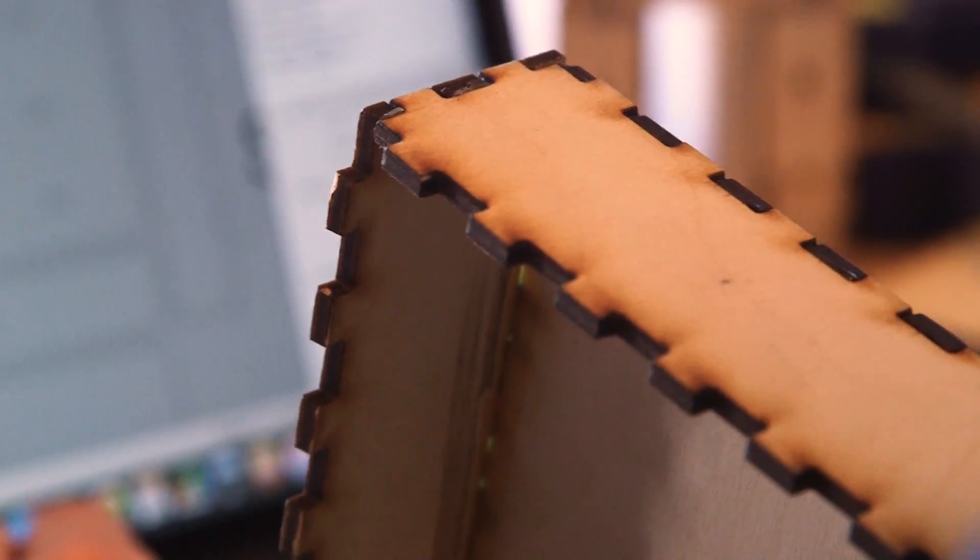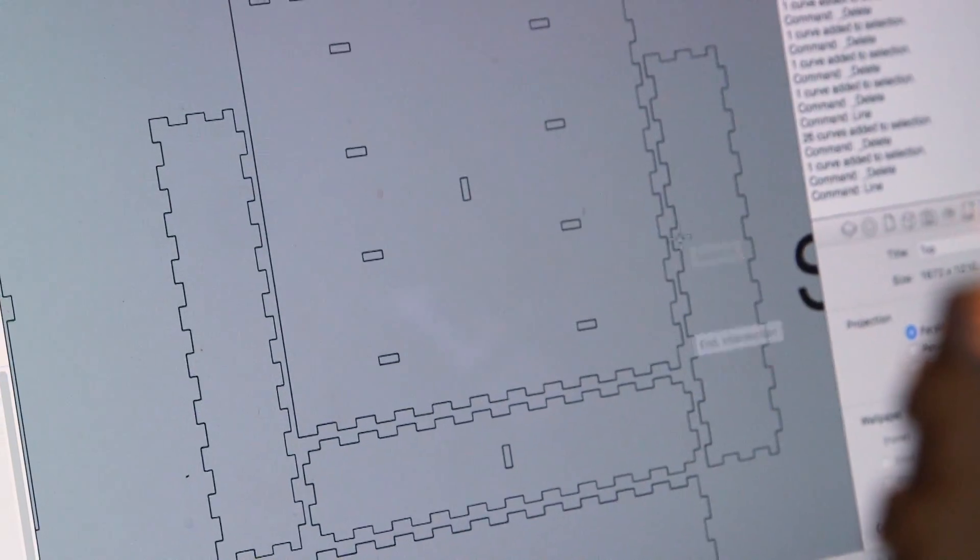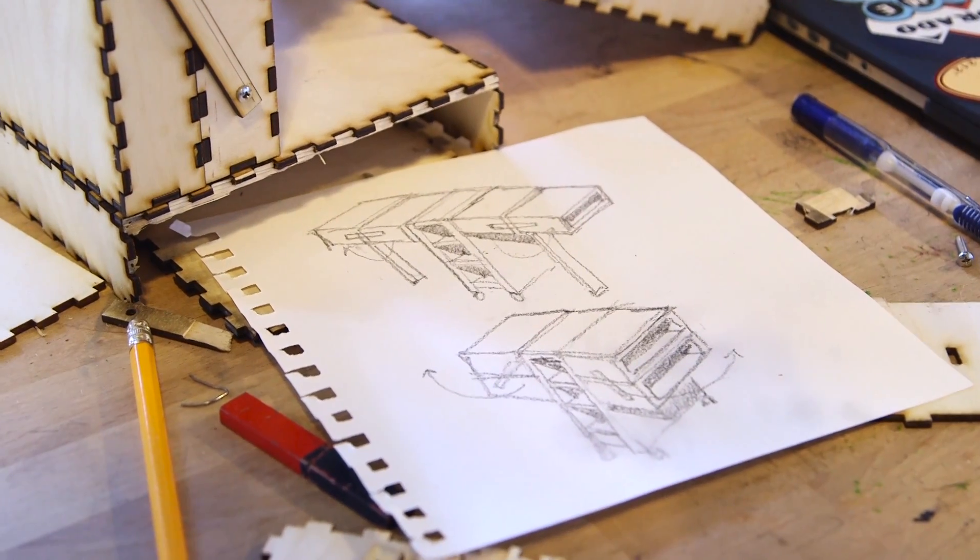Each time you go from 2D to 3D and back to 2D you learn a lot. Every time you do that you'll see your mistakes and you can improve upon them and make sure they don't happen again.